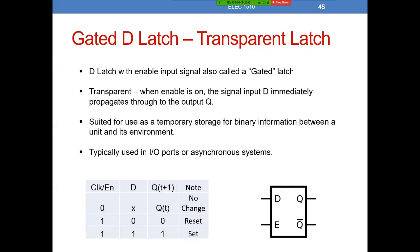This is suited for use only as temporary storage, right between a unit and its environment. We use things like a gated D latch to capture temporary information. For example, if you're typing at your keyboard and you want to store the key that was typed, it's often stored in a D latch. That information is then at some point pulled out of that D latch memory and sent into another circuit. So typically that's used in an input-output port. Your keyboard is an asynchronous system — nobody ever knows exactly when you're going to hit a key; you don't hit it in a synchronized fashion.